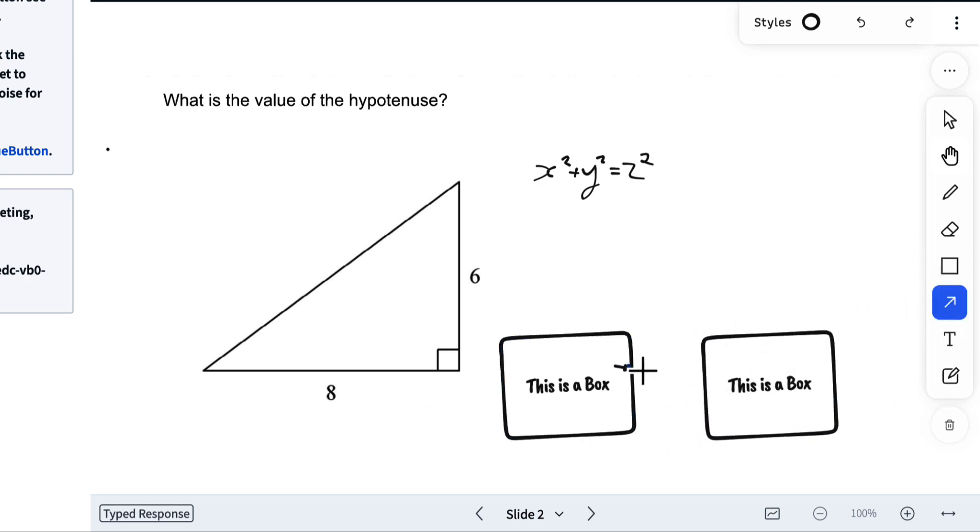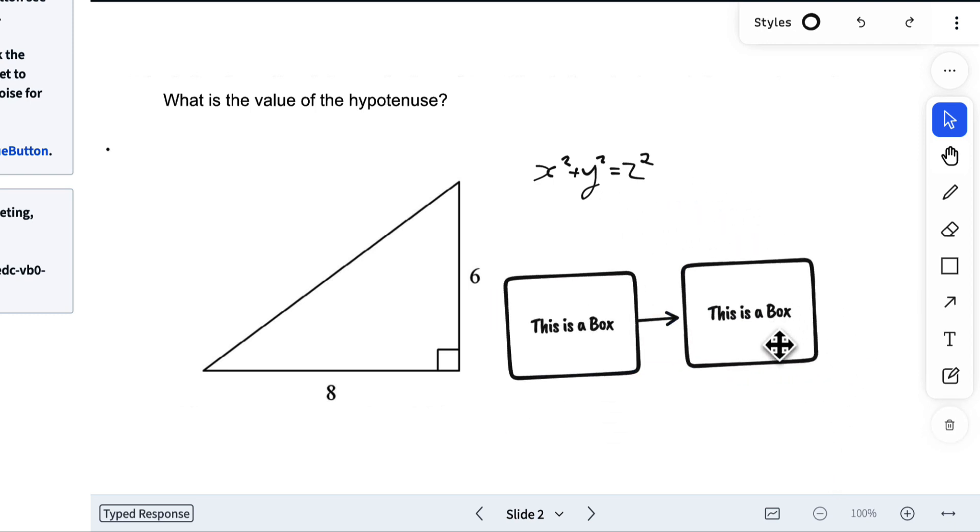The next tool is an arrow. I can draw an arrow between the boxes, and now they're linked. I can select them and move them around together.